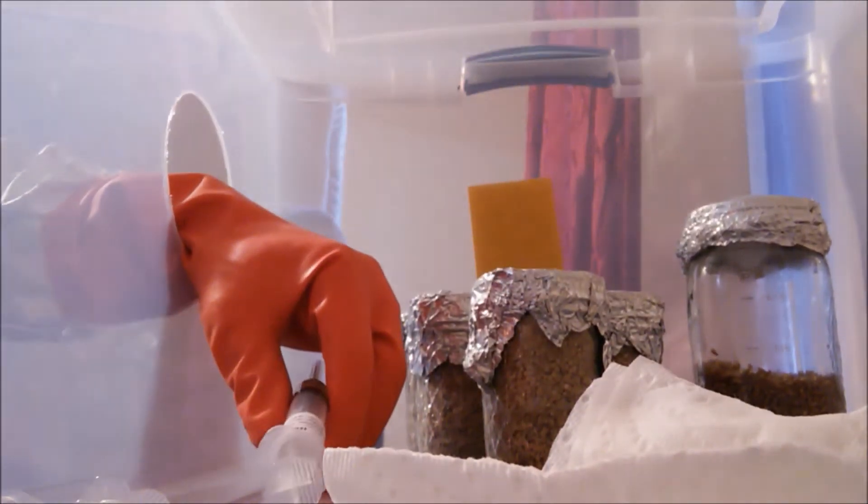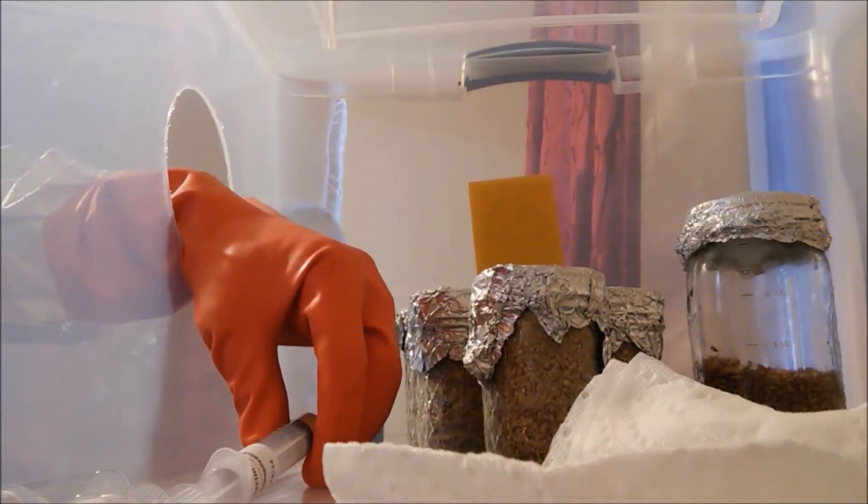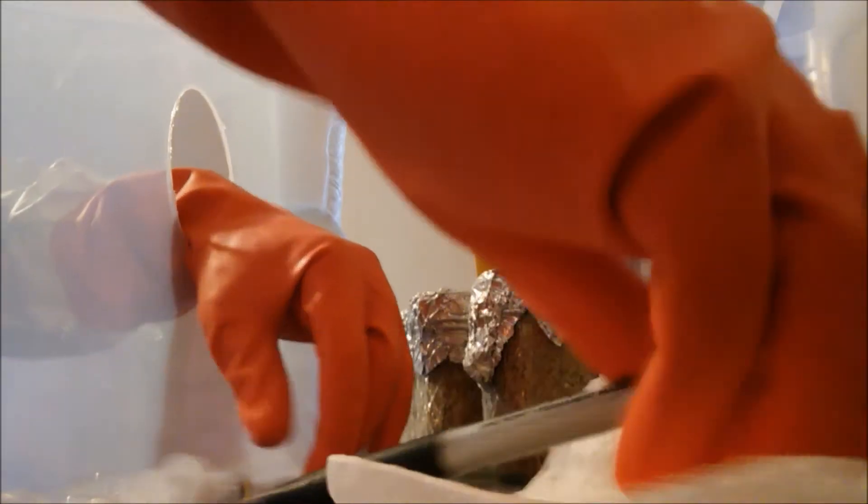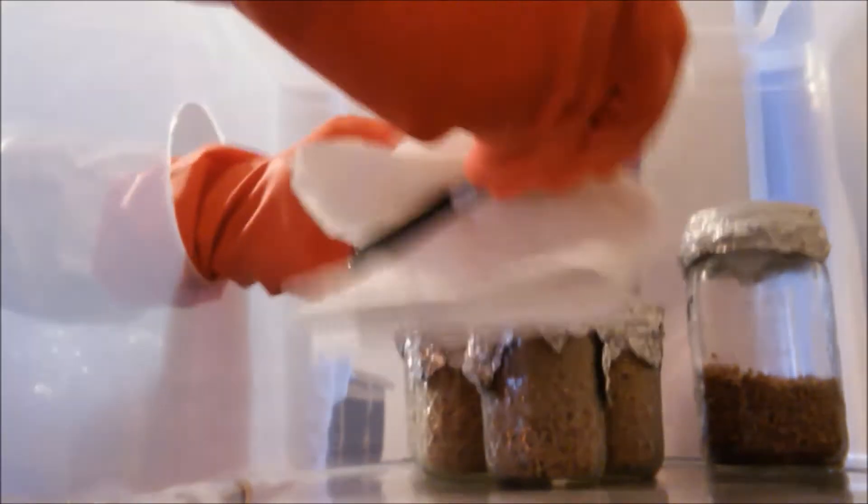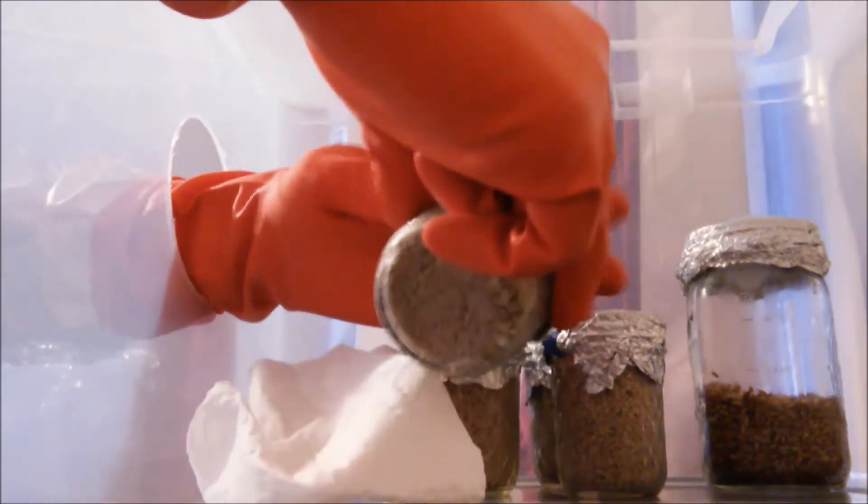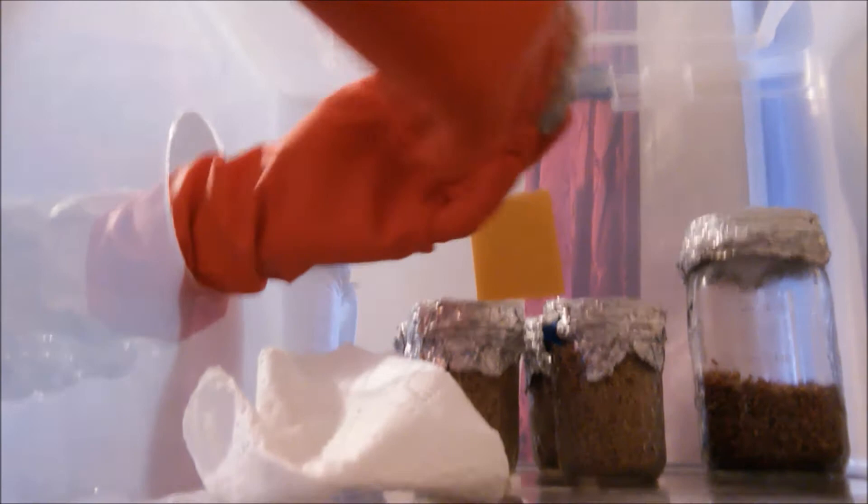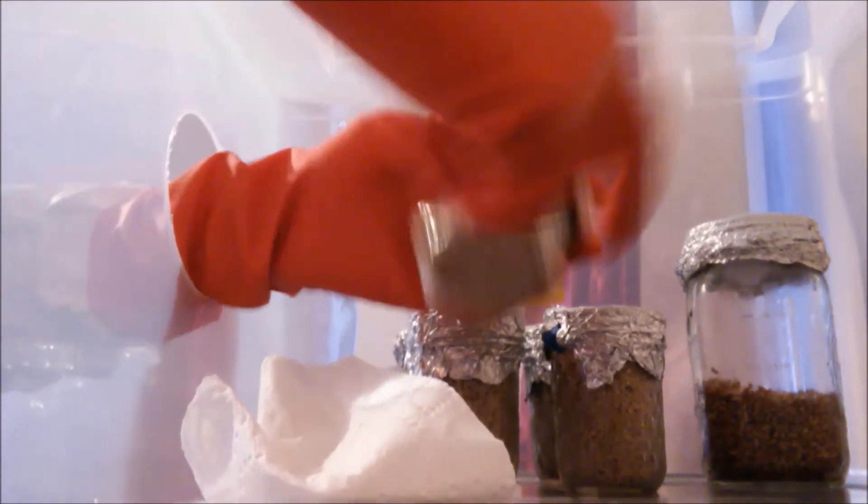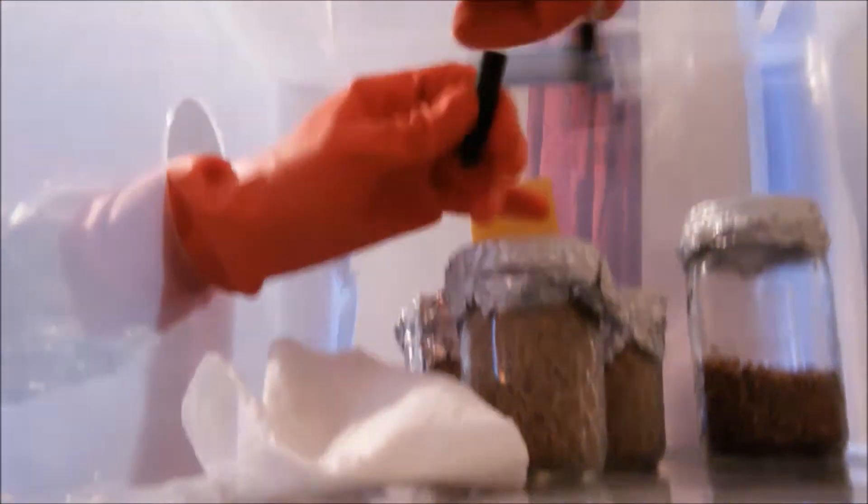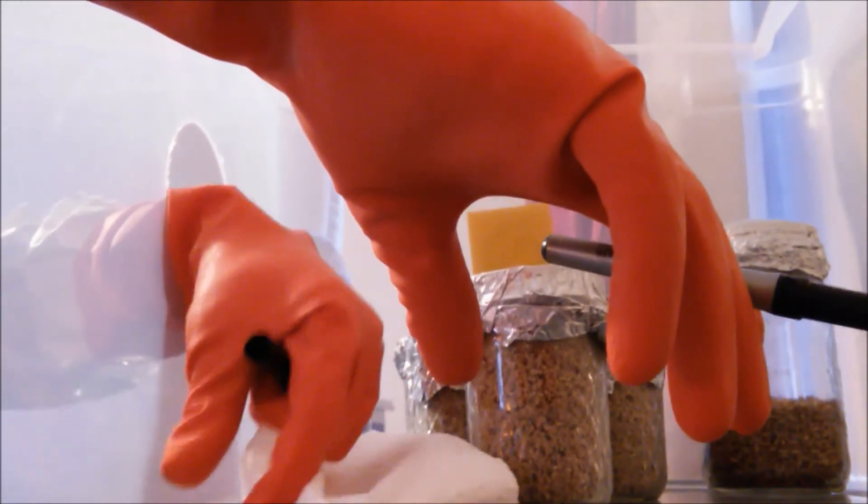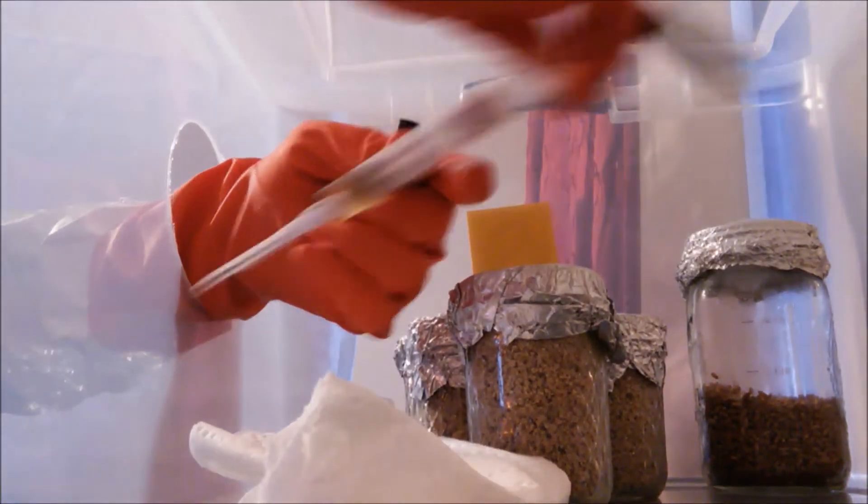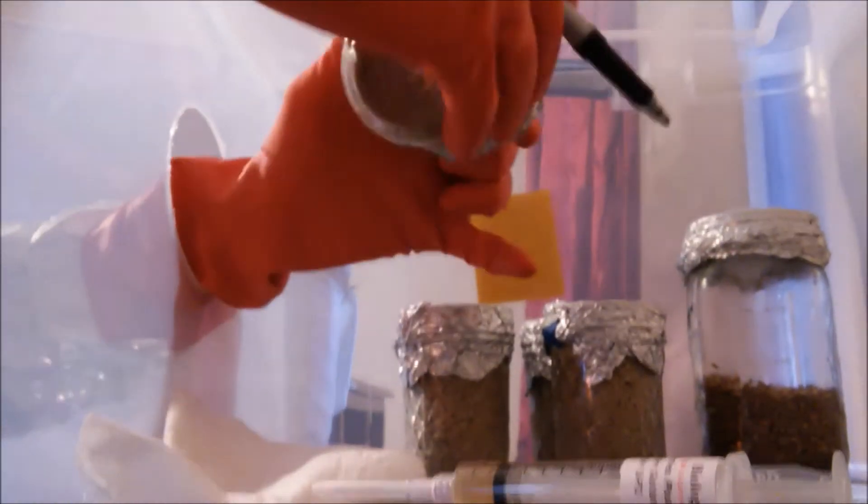So the first thing that we got to do is make sure that we label our jar. Find a little clearer spot and label it. First one is going to be actually golden oyster, so I'm going to label this as gold.